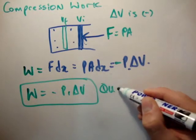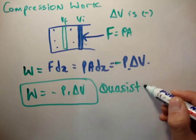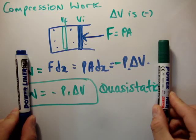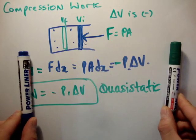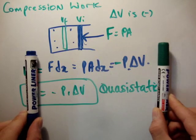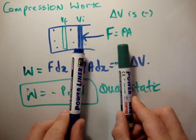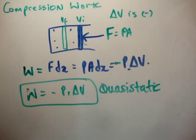This is quasi-static. That means it's done in small infinitesimal steps. We're compressing in small little steps, and in between each step we allow the system to come into thermal equilibrium — that's what quasi-static means. So work done in a quasi-static nature is negative P·dV.